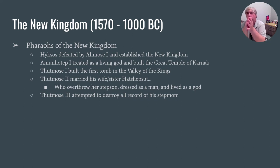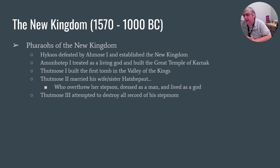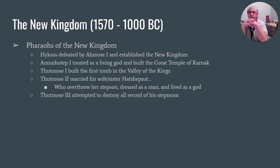Ahmose I is going to be the one who drives the final nail into the Hyksos and establishes the New Kingdom. There's going to be a pharaoh named Amenhotep who will build the Great Temple of Karnak. Thutmose I builds the Valley of the Kings. Thutmose II marries his wife — who is also his sister — Hatshepsut. Hatshepsut is going to overthrow her stepson once Thutmose II dies. She is going to pretend to be a living god, pretend to be a man, and wear a false beard on her face because that was the symbol of a pharaoh.